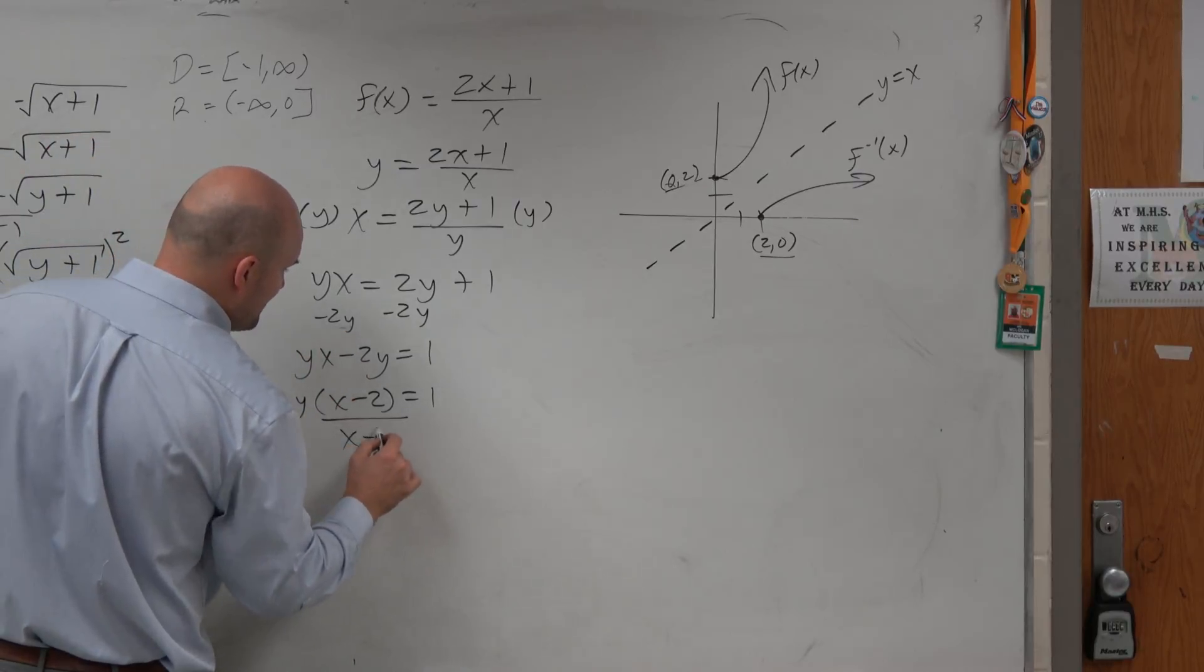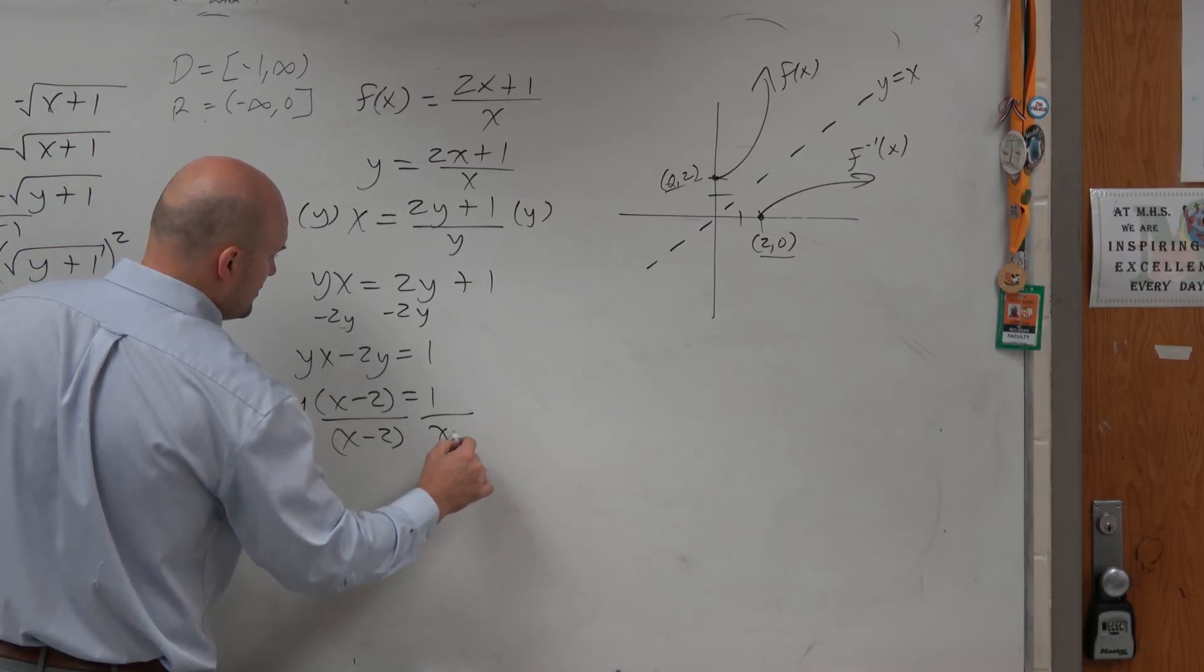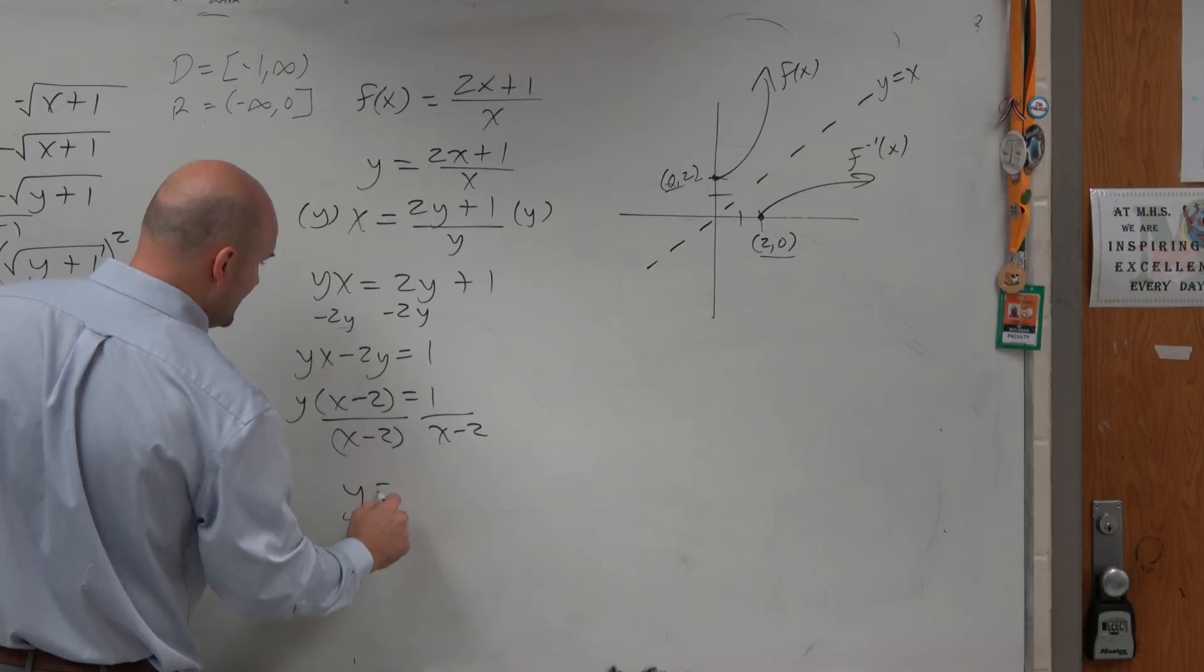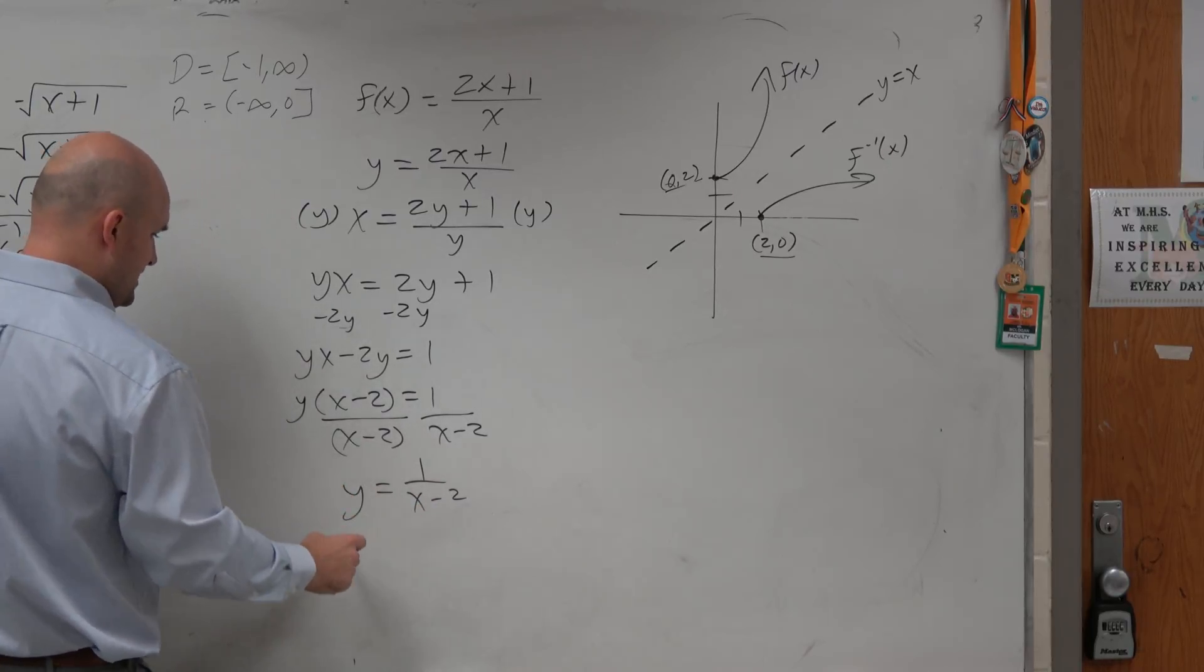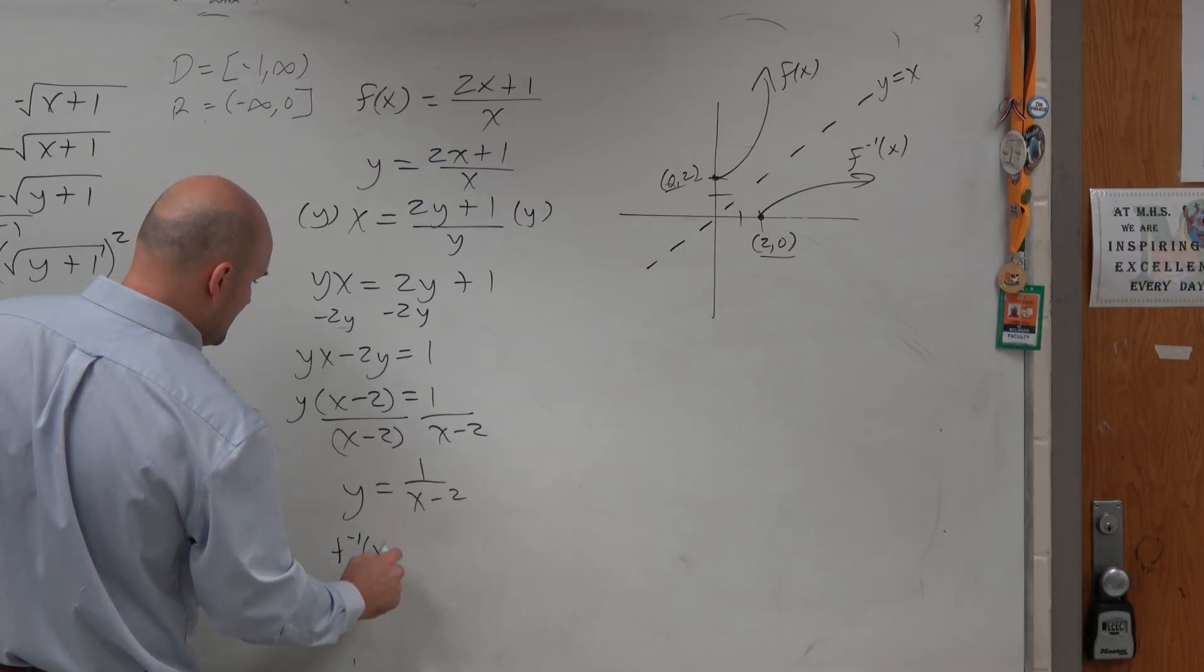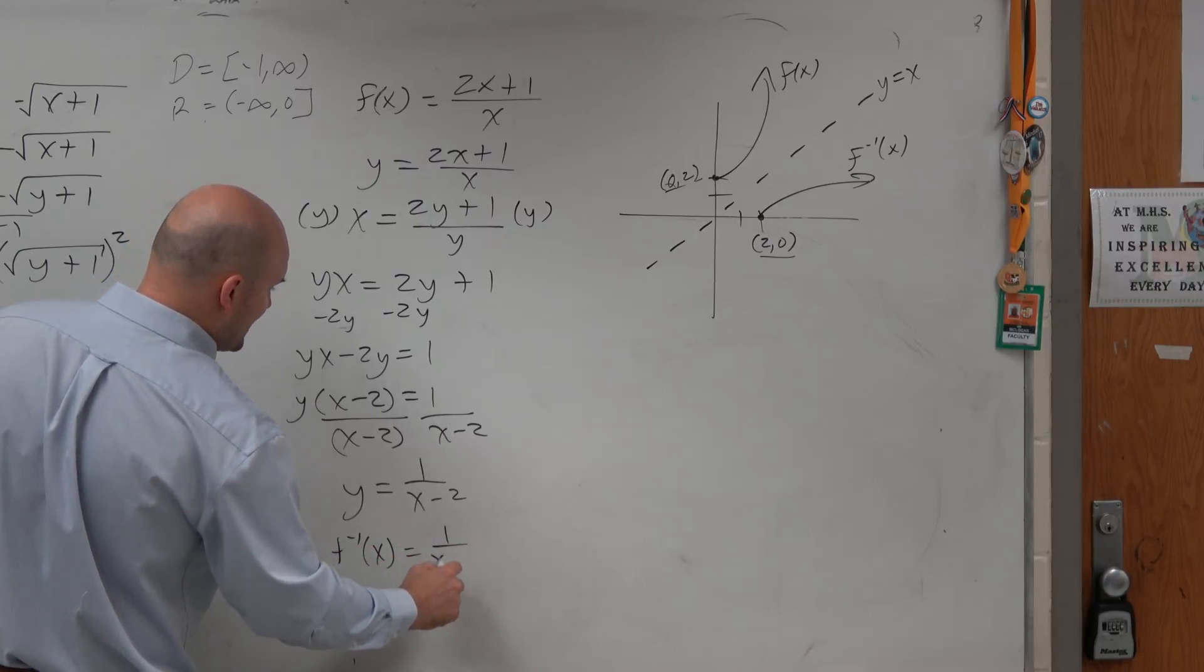And now, you can divide by x minus 2, and you get y equals 1 over x minus 2, and therefore, you could say f inverse of x is equal to 1 over x minus 2.